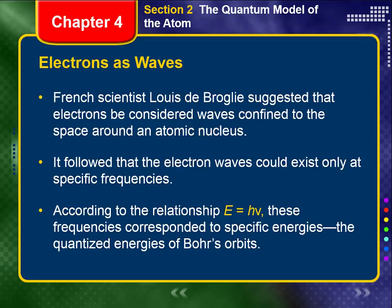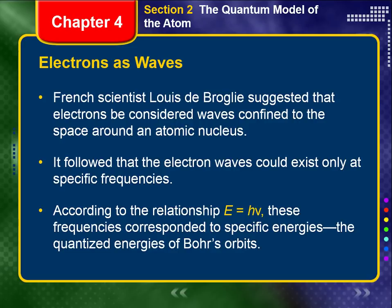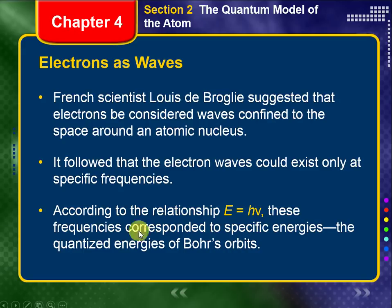So if we remember the relationship — energy is equal to Planck's constant multiplied by frequency, E equals H nu — if electron waves can only exist at specific frequencies, then this frequency value can only have certain values. For hydrogen, we see that there are four lines on the line emission spectrum, so there are four frequencies in the visible part of the electromagnetic spectrum, only four, meaning there are only four energies associated with hydrogen. These frequencies correspond to specific energies because H is constant, so when nu changes, E changes. These are the quantized energies of Bohr's orbits.